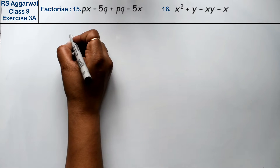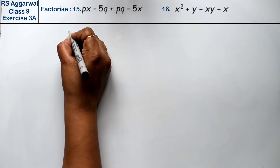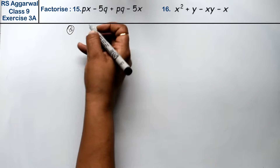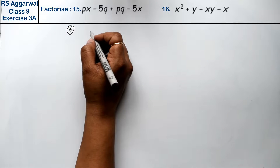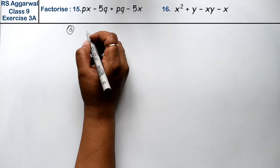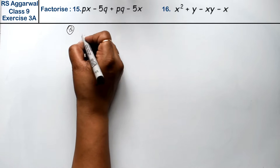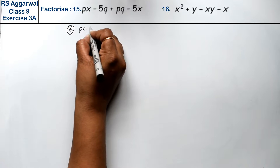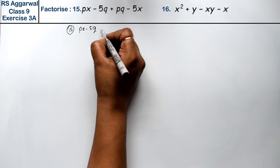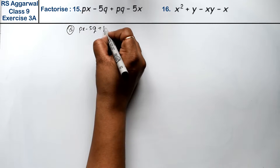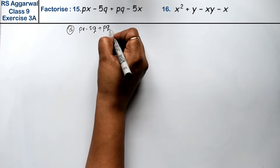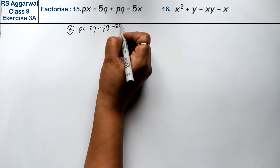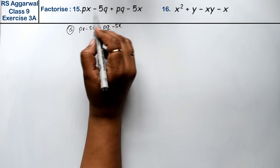Let's do question number 15 of exercise 3a, that is factorization of polynomials. Question number 15 is px minus 5q plus pq minus 5x.